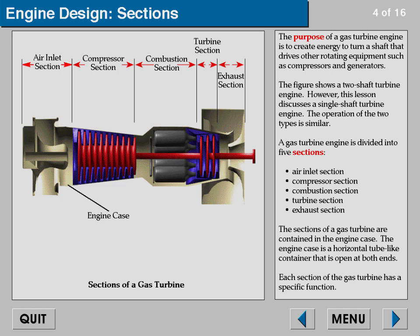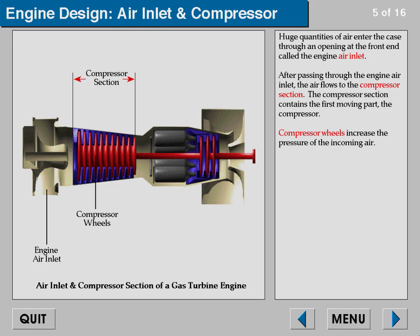A gas turbine engine is divided into five sections: air inlet section, compressor section, combustion section, turbine section, and exhaust section. The sections of a gas turbine are contained in the engine case. The engine case is a horizontal tube-like container that is open at both ends. Each section of the gas turbine has a specific function.